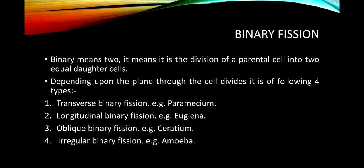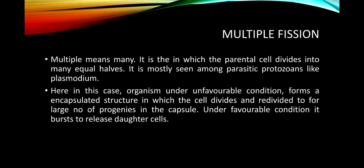Depending upon the plane through which the cell divides, binary fission is of four types: transverse binary fission as in paramecium, longitudinal binary fission as in euglena, oblique binary fission as in dinoflagellates, and irregular binary fission as in amoeba.